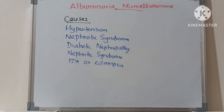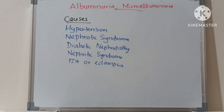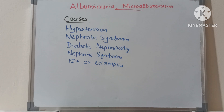The main causes of albuminuria include hypertension, nephrotic syndrome, diabetic nephropathy, nephritic syndrome, and pregnancy-induced hypertension (PIH) or eclampsia.